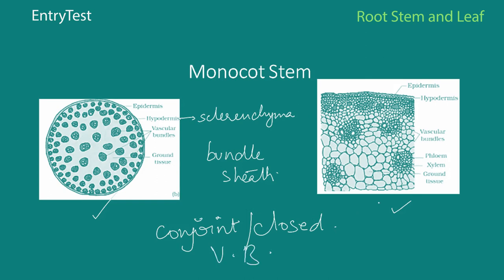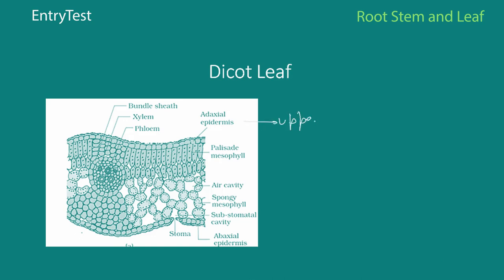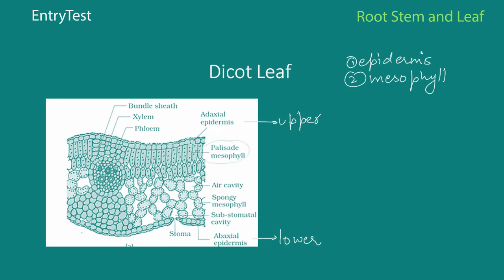The next important structure is the dicot leaf, which is a dorsiventral section. The epidermis has two parts: the adaxial epidermis on the upper side, which has fewer or sometimes zero stomata, and the abaxial epidermis on the lower side. The second layer is the mesophyll, which in a dicot leaf is of two types: palisade mesophyll with fewer intercellular spaces, and spongy mesophyll.